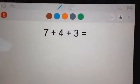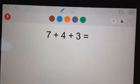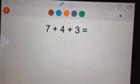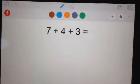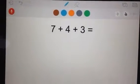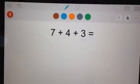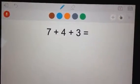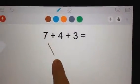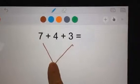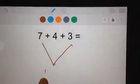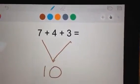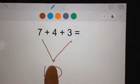This problem says 7 plus 4 plus 3 equals we don't know. I'm going to look for my partners of 10. Now remember boys and girls that your partners aren't always next to each other. I see that my partners of 10 are 7 and 3. So it's this number plus this number. 7 plus 3 equals 10 and I'm going to count on my last whole number.